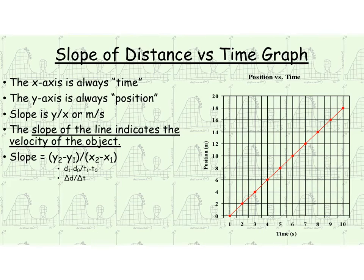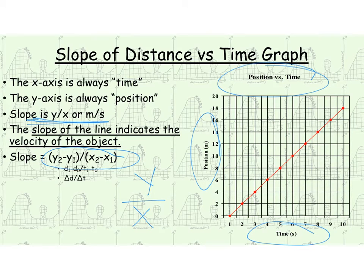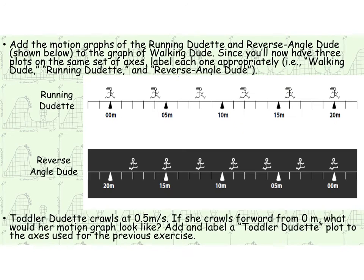So just to recap, x is always time, y is always position. It's always said as position versus time. Your slope is going to tell you your velocity. It's also y over x. Slope formula, y2 minus y1 over x2 minus x1. And then this is just looking at it in the variable point of view. So distance 1 minus 0 over time minus 0's values, or change in distance over change in time. So these are just all ways to say the same things we've been saying.